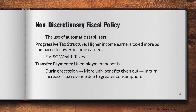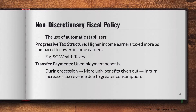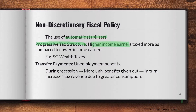Non-discretionary fiscal policy relies on a mechanism called automatic stabilizers. It does not directly involve the government tweaking its spending levels or taxes to improve the situation in an economy. Instead, it looks at things that help an economy stabilize itself automatically. A first example is the progressive tax structure, whereby higher income earners are taxed more compared to lower income earners.